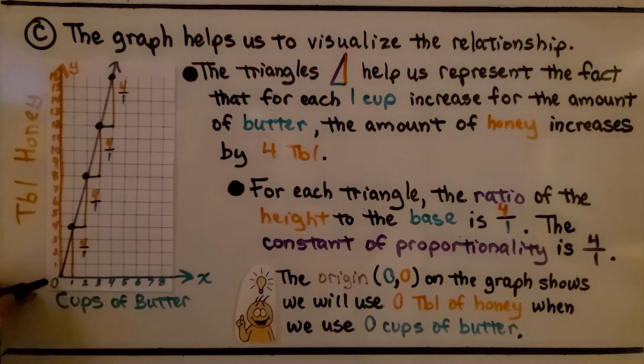The constant of proportionality is 4 to 1. The origin, 0, 0, where x is 0 and y is 0 on the graph, shows we'll use 0 tablespoons of honey when we use 0 cups of butter.